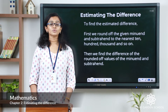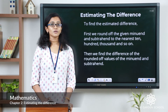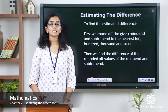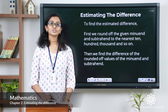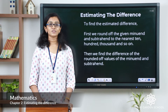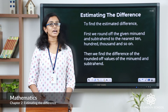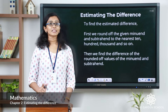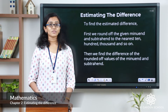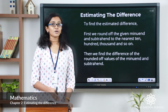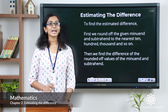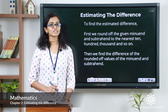First, you have to round off both the minuend and the subtrahend to the nearest ten, hundred, thousand, and so on. Then you have to find the difference of the rounded off values to get the estimated difference.